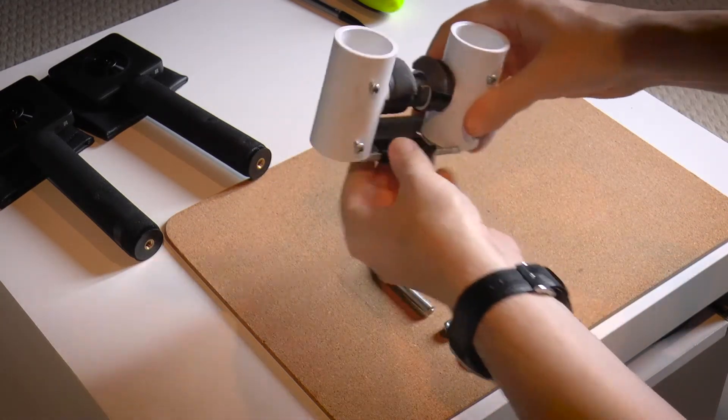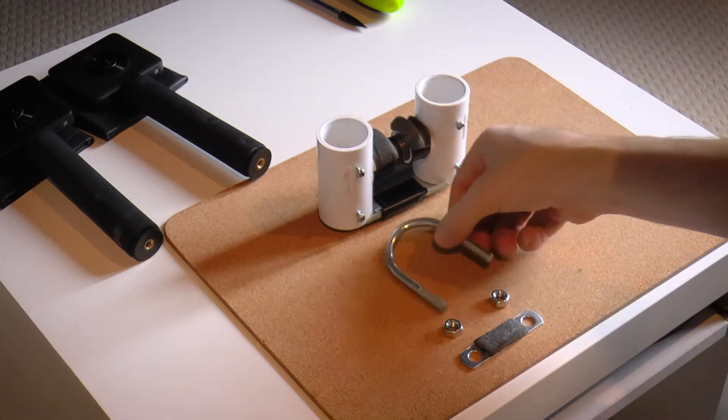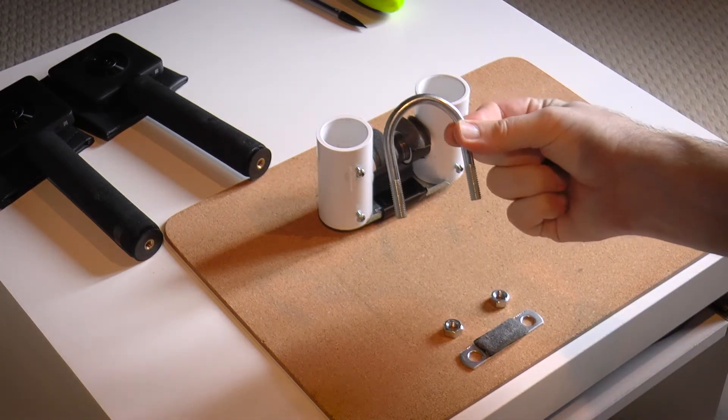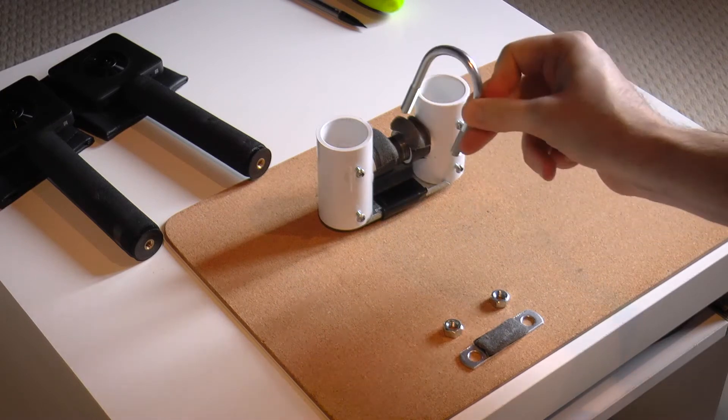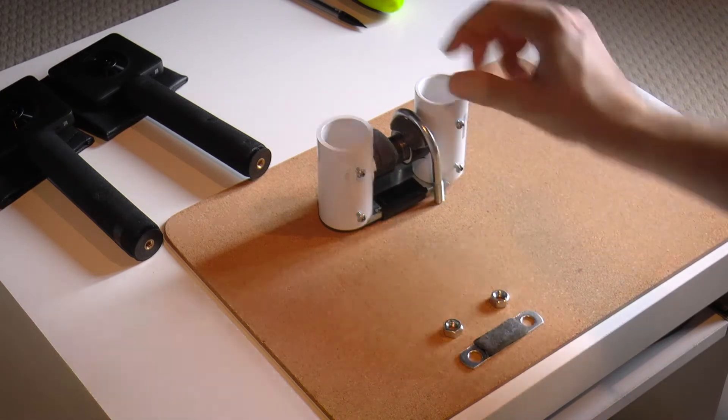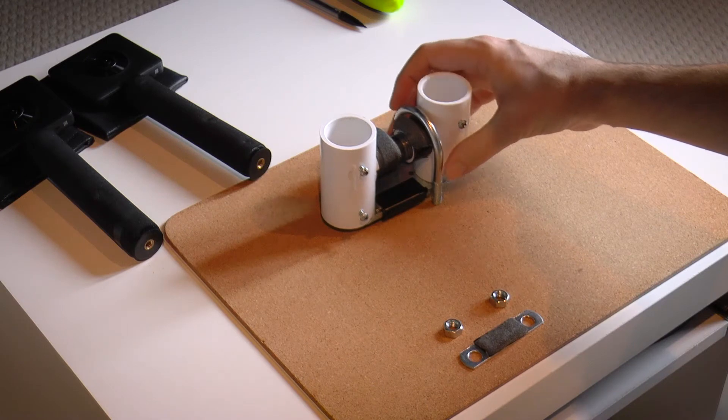So once you have the handles placed onto your base plate here, just get a U-bolt of a reasonable length, and fit it over a side channel on one of the handles.